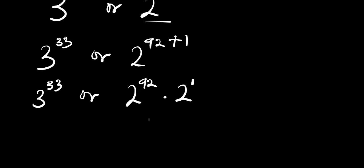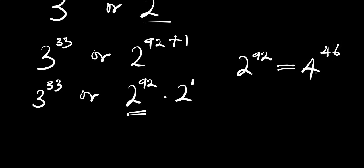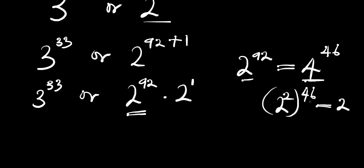Now 2 to the power of 92 absolutely equals 4 to the power of 46, because if you rewrite 4 as 2 squared, you have 2 to the power of 2 times 46, which gives 2 to the power of 92. So we replace this with 4 to the power of 46, giving us 3 to the power of 33 versus 4 to the power of 46 times 2.